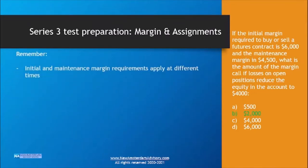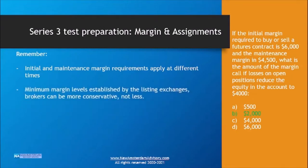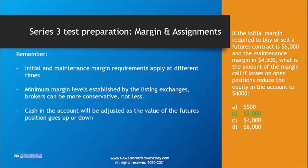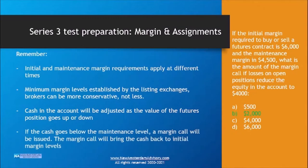Key takeaways: initial margin applies at establishing the trade; maintenance margin applies for the duration of the position. Minimum margin levels are set by exchanges; brokers can be more conservative but not less. The cash in the account adjusts as the futures position value changes up or down. If it falls below the maintenance level, a margin call is issued — and that margin call brings the cash back to the initial margin level, not just the maintenance level.